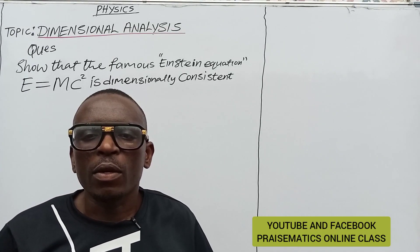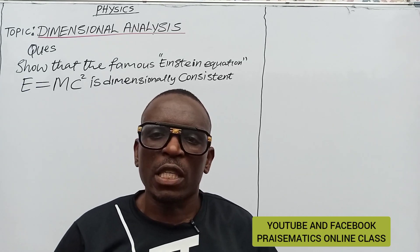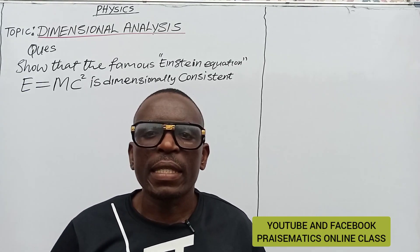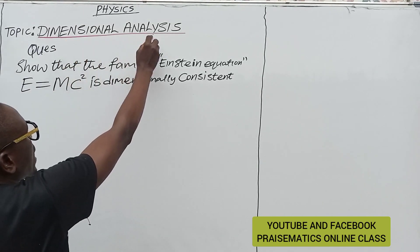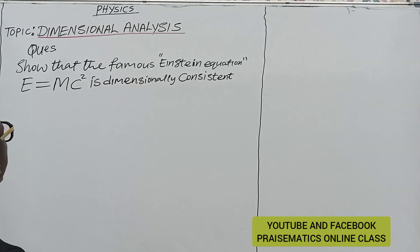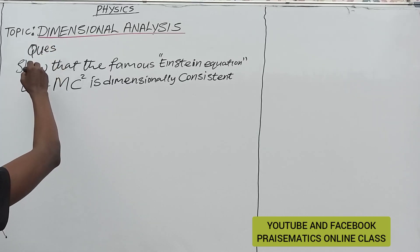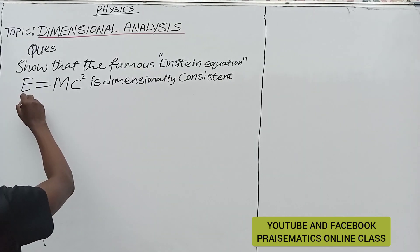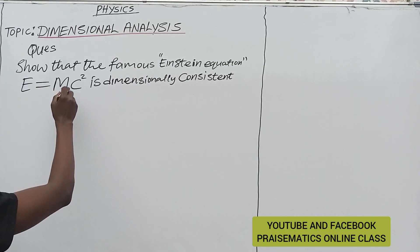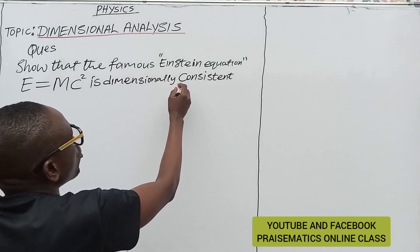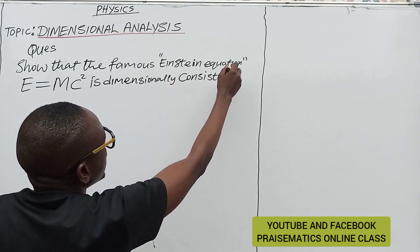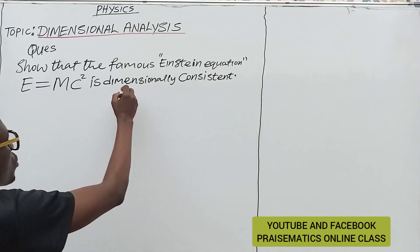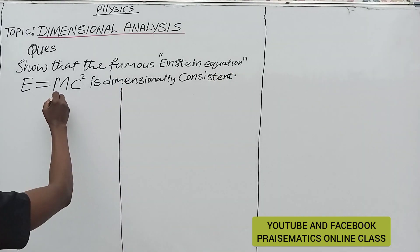Hello friends, welcome to Prismatis Online Class. In today's class we are going to look at dimensional analysis. The question on the board says: show that the famous Einstein equation E = mc² is dimensionally consistent. Let's solve the solution.